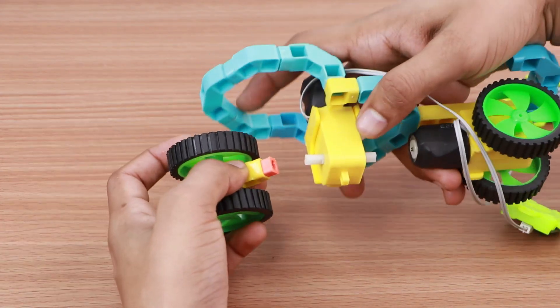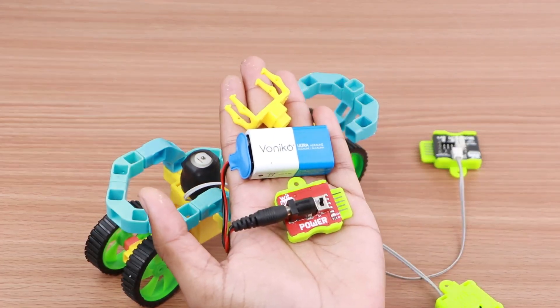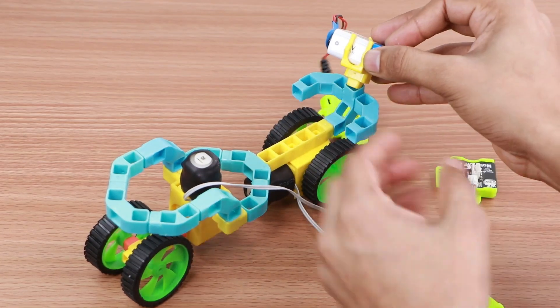Attach this rotating wheel assembly to the BO motor shaft. Take the power blocks connected to battery and attach the battery to the battery holder.